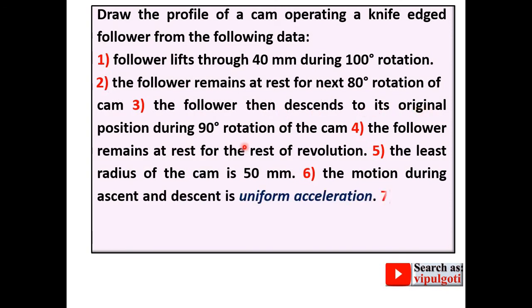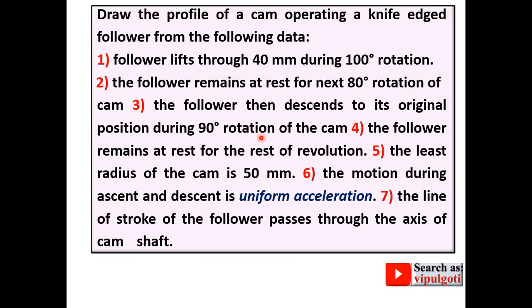The follower then descends to its original position during 90 degree rotation of the cam, that means descent angle. The follower remains at rest means next remaining dwell period. The least radius of the cam is 50 mm, so it is the radius of the base circle.